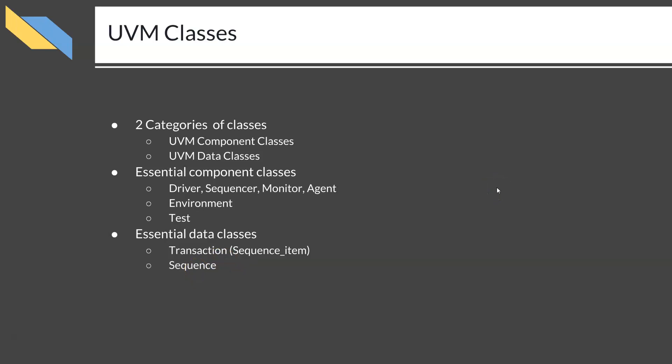When you are writing a UVM based testbench, all you have to do is write all these classes — your own classes extending from the corresponding base classes. For example, you need to write your own driver class extending from UVM driver, and your own environment class extending from the UVM environment class, and so on.